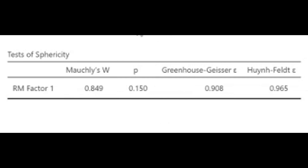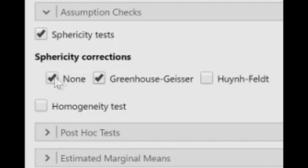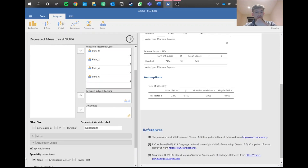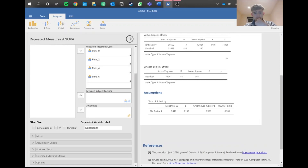However, if sphericity was violated — i.e., the p-value was below 0.05 — you'd look at the GG epsilon and HF epsilon values. If the GG epsilon is below 0.75, you would apply the Greenhouse-Geisser correction. If it's above 0.75, you'd use the Huynh-Feldt correction instead. In our case, sphericity is met, so no correction is needed.